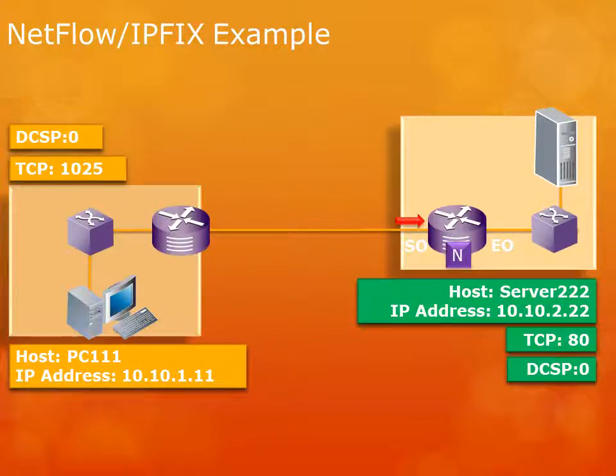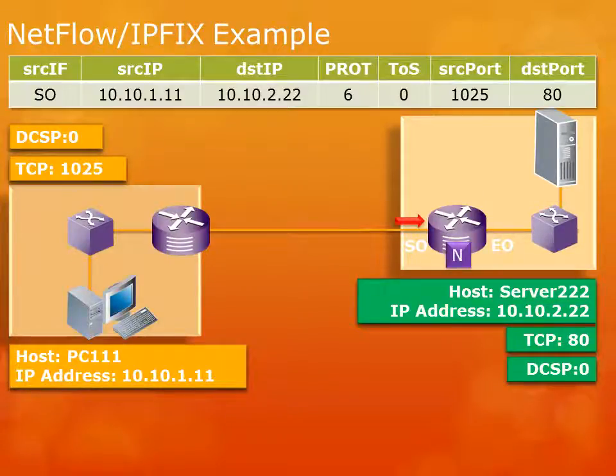As soon as that packet comes into the serial interface of our NetFlow-enabled router, the cache gets an entry. In the NetFlow cache — this is a truncated table — we see the source interface, source IP address (our 1.11), destination IP address (2.22), Protocol 6 (TCP — 6 for TCP, 17 for UDP), TOS value of 0, source port 1025 (our user's TCP port), and destination port 80 (our server's web port).